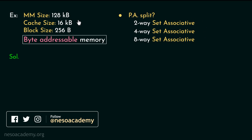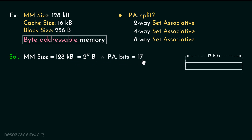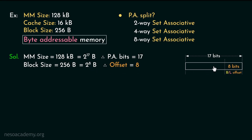The main memory is 128 kilobytes, which in other words we can say is 2 to the power 17 in terms of bytes because it's a byte addressable memory. Now why 2 to the power 17? Because 128 is 2 to the power 7 and kilobyte is 2 to the power 10. Therefore for the physical address we will be needing 17 bits. Now coming to the block size, it's given as 256 bytes which can also be written as 2 to the power 8 in terms of bytes. So for offset we will be needing 8 bits.